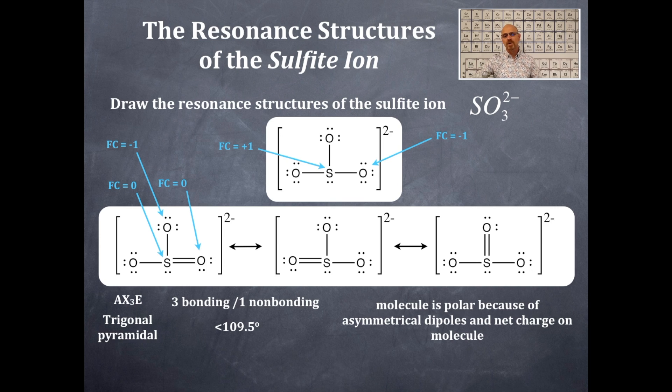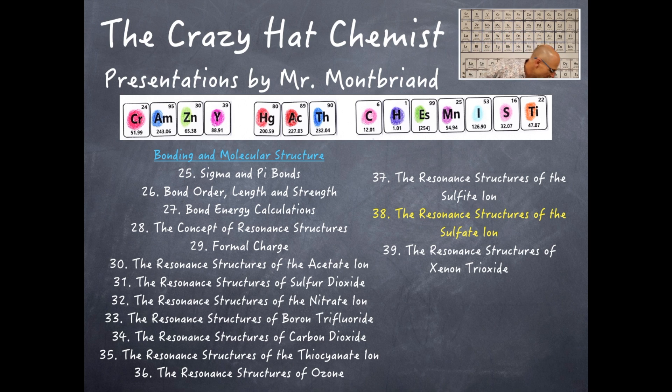This molecule is polar. Well, it has a net charge of negative 2. Therefore, it's polar. It has dipole bonds. It has polar bonds in it. And it is asymmetrical because it is trigonal pyramidal. Its shape is trigonal pyramidal. Therefore, it is polar. And that is the end of that one.